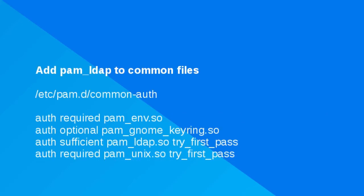To enable all services using the common-auth file to use LDAP, add a line with the pam_ldap module. In our configuration, we will make the control sufficient so if authentication via LDAP to eDirectory succeeds, there is no need to also attempt authentication to the local SUSE system by way of the pam_unix module. The try_first_pass directive tells the module to try the password received above in the module stack, if applicable, and only prompt for a password if that password isn't successful. Note that the pam_unix module is required, ensuring that either pam_ldap or pam_unix is successful for authentication to occur.